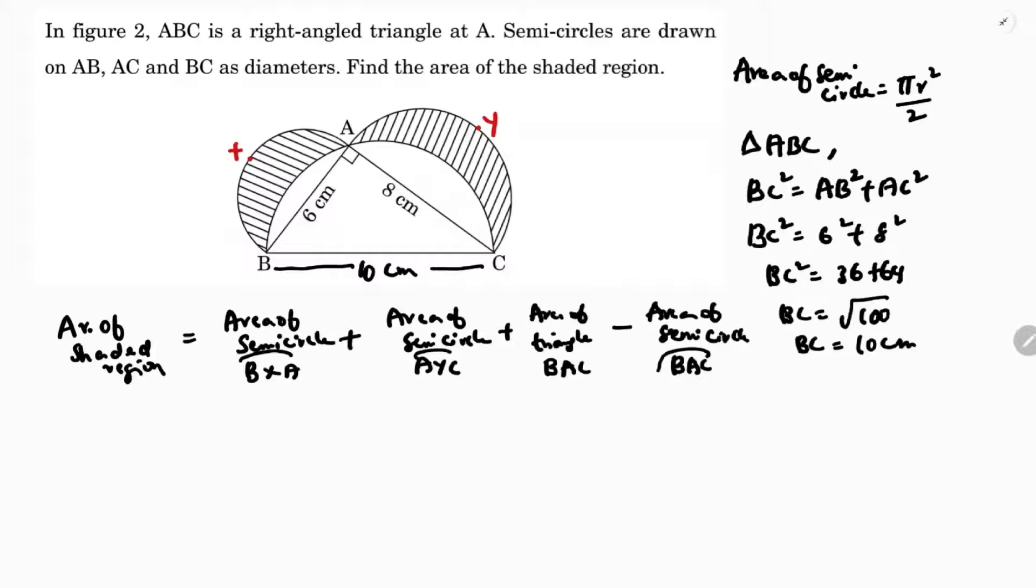Now if I calculate the values. Area of semicircle is pi R square by 2. For BA, diameter is 6, so radius is 3 square by 2, plus area of semicircle pi, diameter is 8, so radius will be 4 square by 2. Area of triangle formula is half base into height. As it is 90 over here, base will be 6 and height will be 8. So half 8 into 6 minus area of semicircle pi, radius is 5 by 2, pi R square by 2.